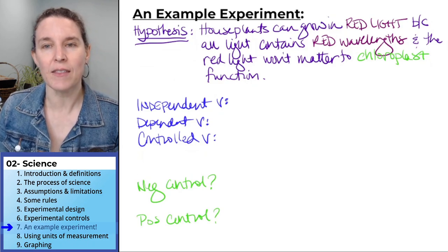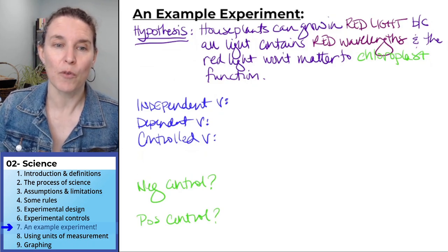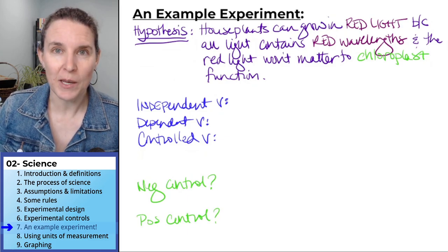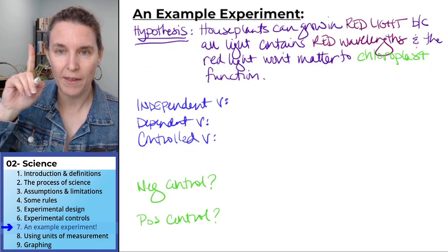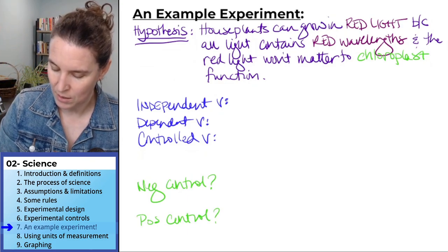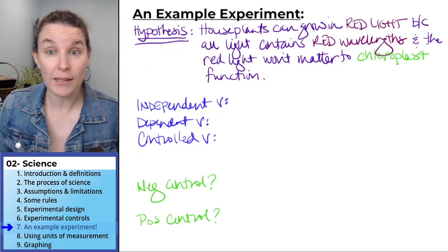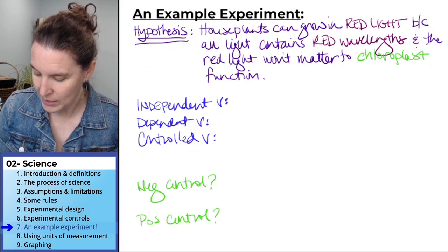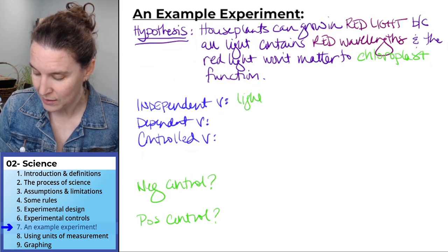Now, let's identify the variables. Remember, before I even do this, the independent variable, one thing, what is the one thing that we are changing here? What is our one independent variable? In this case, the independent variable should be light color.